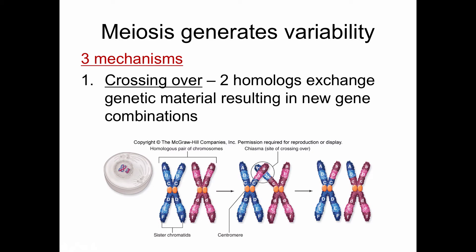The site where chromosomes cross over is called the chiasma — you don't need to remember that, but you can see them held together by the centromere there. So what you want to remember about crossing over: it happens in prophase one of meiosis one. You need to specify 'one' and 'meiosis' — just saying 'prophase' doesn't make sense. The point of it is that it increases genetic variability, results in new gene combinations, and makes each of us more unique.